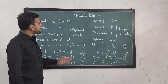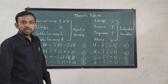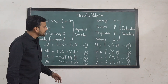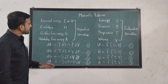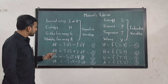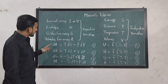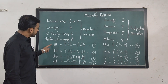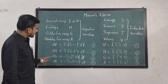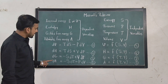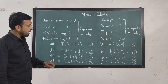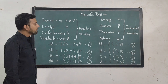With the combinations of these dependent variables and independent variables, we are able to write the four fundamental differential equations for internal energy, enthalpy, Gibbs free energy, and Helmholtz free energy as equation number one, two, three, and four.